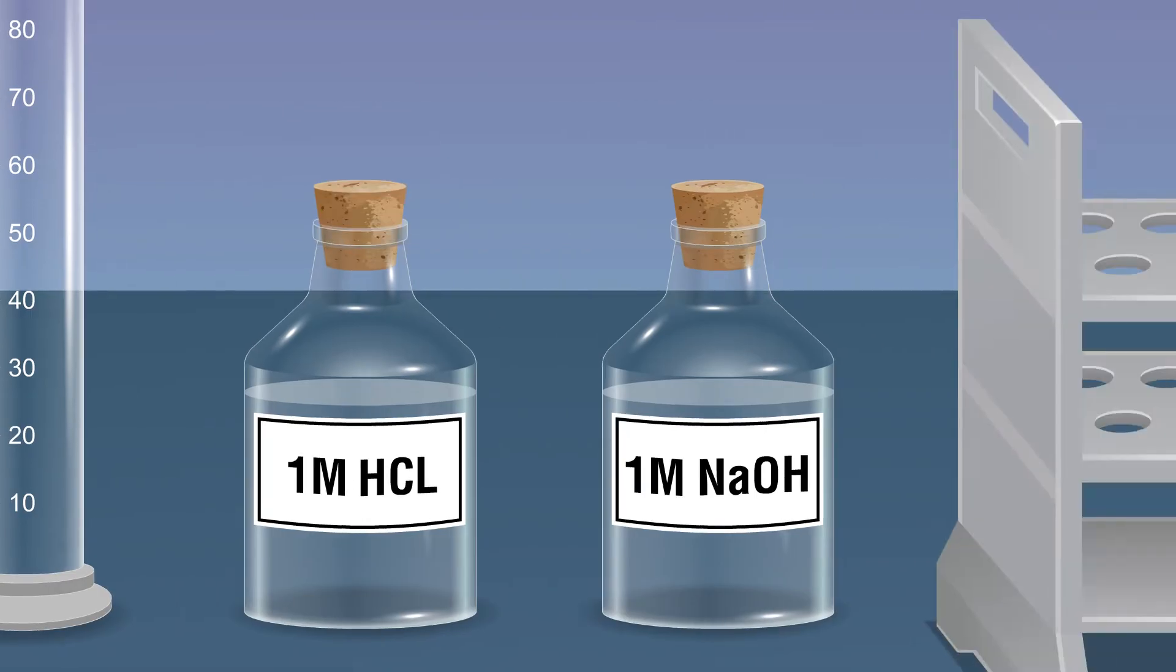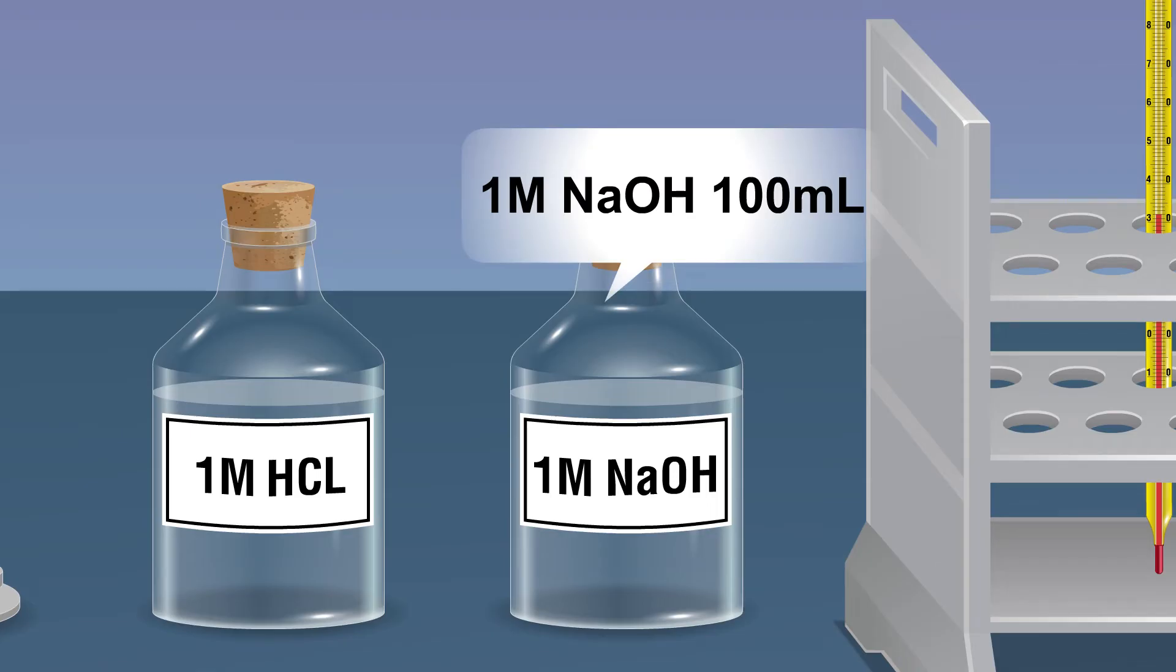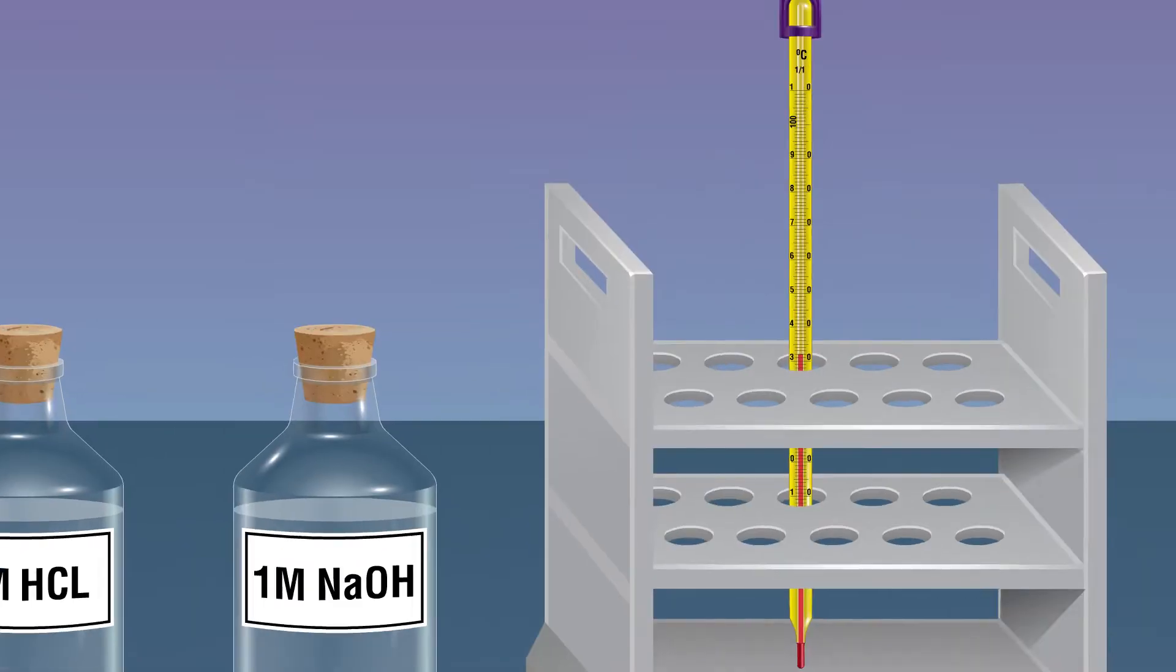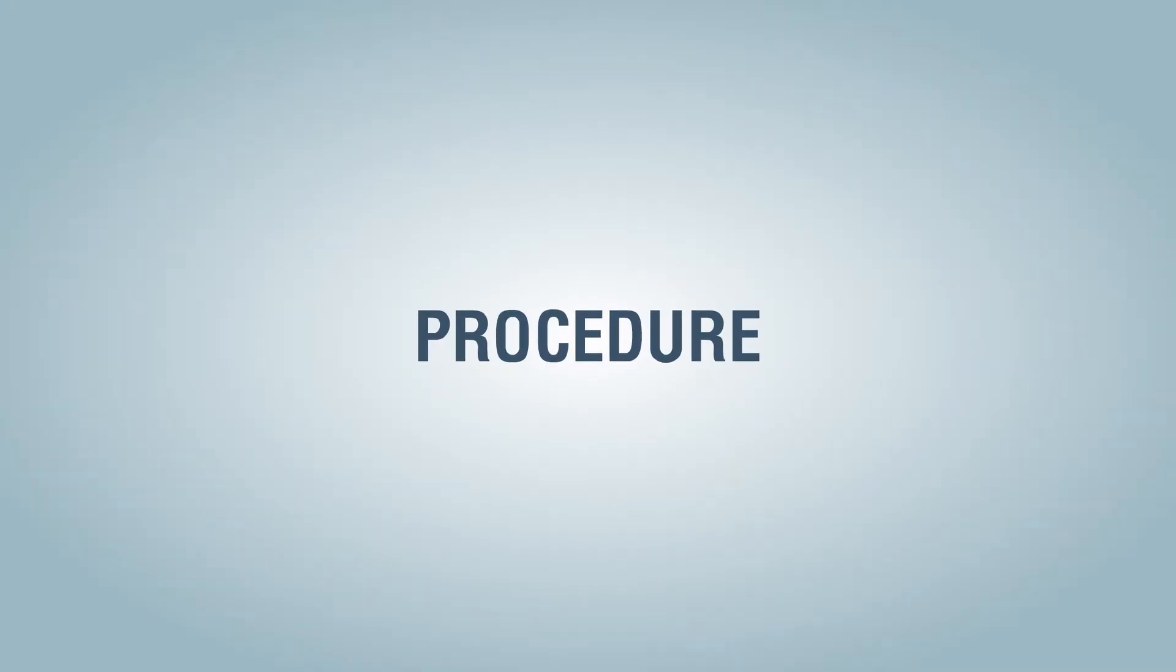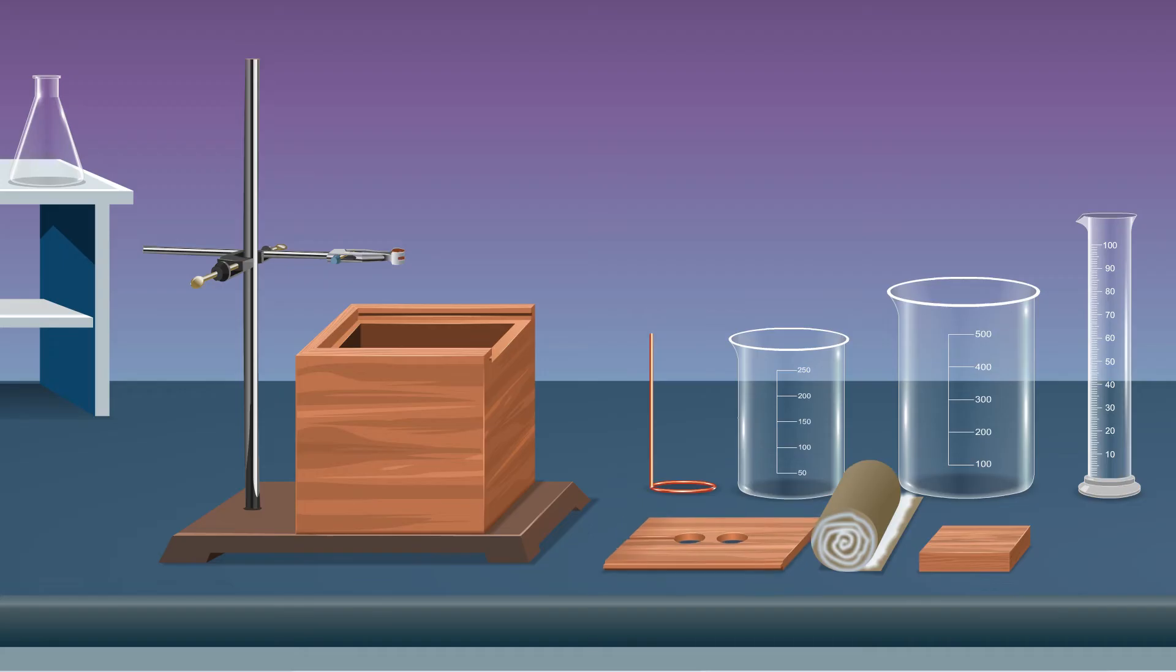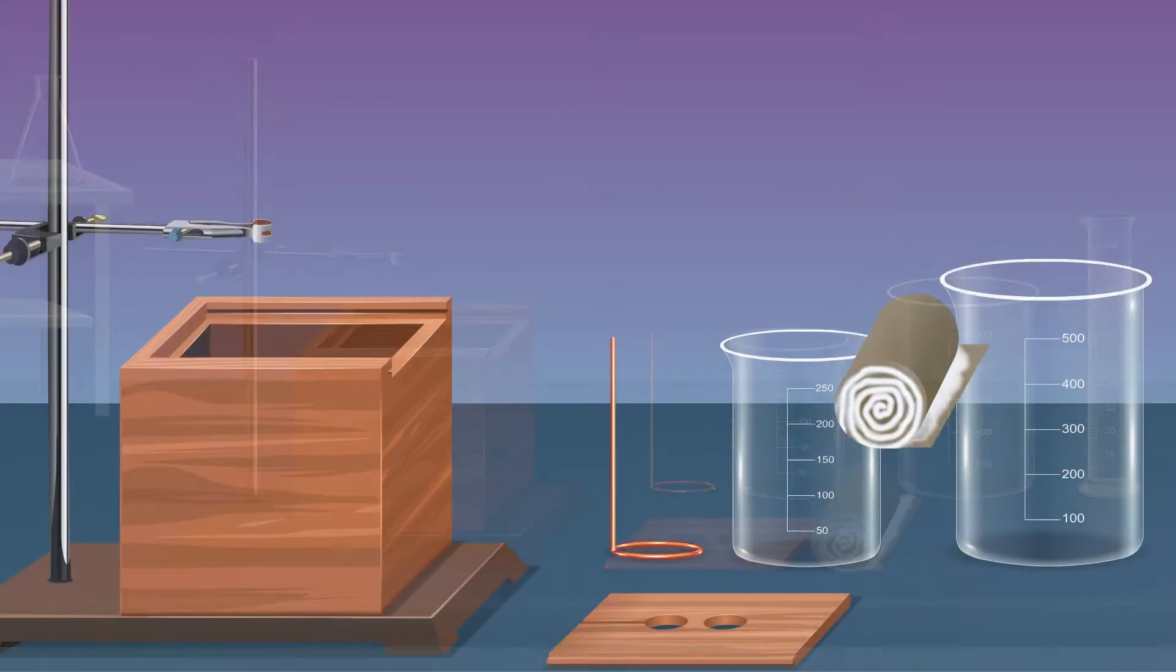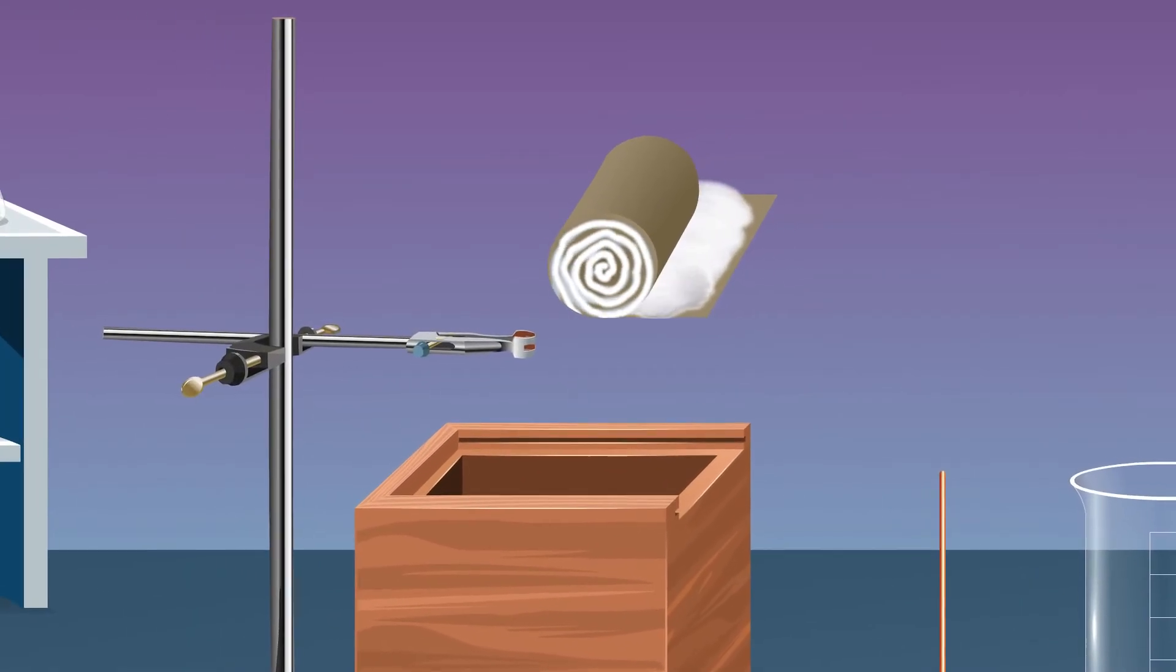100 milliliters 1M NaOH, 100 milliliters thermometer 110 degrees Celsius. Procedure: make a setup of a calorimeter. Take an expanded wooden box and fill it with cotton wool.